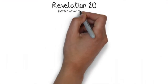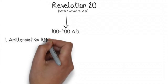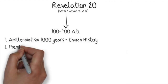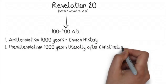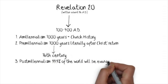Revelation chapter 20 is the only place in the Bible where the idea of the millennium is found. The earliest Christians had two ways of interpreting the millennium. The first is amillennialism, which taught that the 1,000 years symbolically refer to the whole age of the church. The second is premillennialism, which taught that there would be a literal future 1,000-year period at the end of time. During the Reformation, a third view arose called postmillennialism — the idea that 99.9% of the world will one day be evangelized before Christ returns.